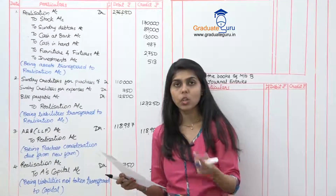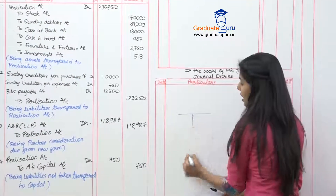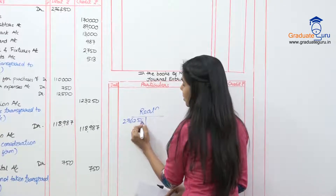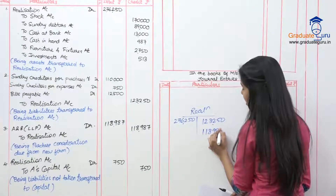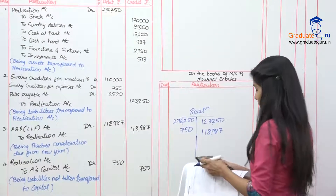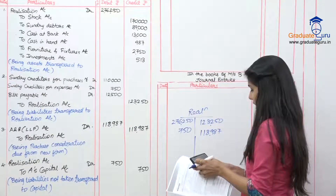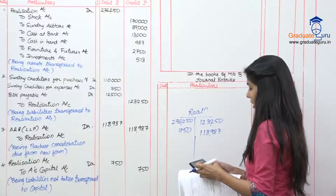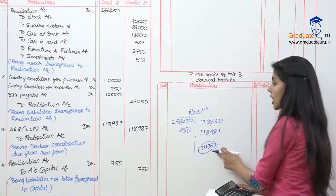Now calculate the realization profit or loss. Debit side: 2,76,250 (assets) plus 750 (liability reversal) = 2,77,000. Credit side: 1,23,250 (liabilities) plus 1,18,987 (PC) = 2,42,237. Debit is more, so there is a loss of 34,763 on realization.